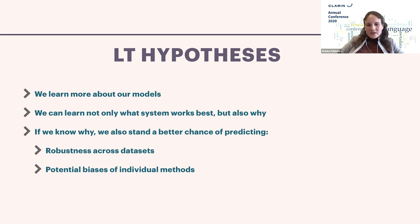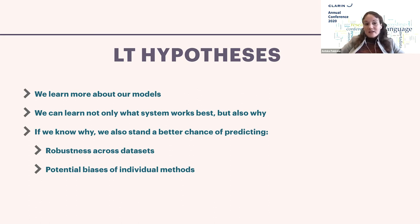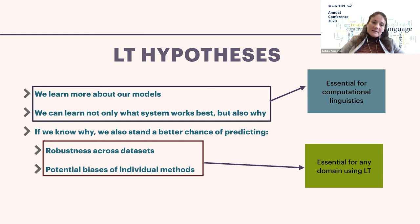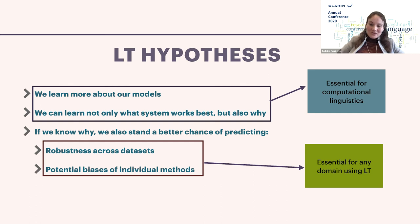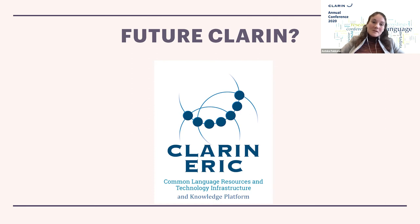If we do hypothesis-driven research, we learn more about our models — not only what system works best but also why. Knowing why means we can better predict robustness across datasets, because we understand what properties affect results. We are also more likely to identify potential biases in individual models. The first two aspects — understanding what models do and how to model language computationally — are essential for computational linguistics. The latter two — knowing what goes wrong and whether a model can be used for your specific data — are essential for any discipline that wants to use language technology. Perhaps the future CLARIN will be not just a research infrastructure but also a knowledge platform where we share methodologies.